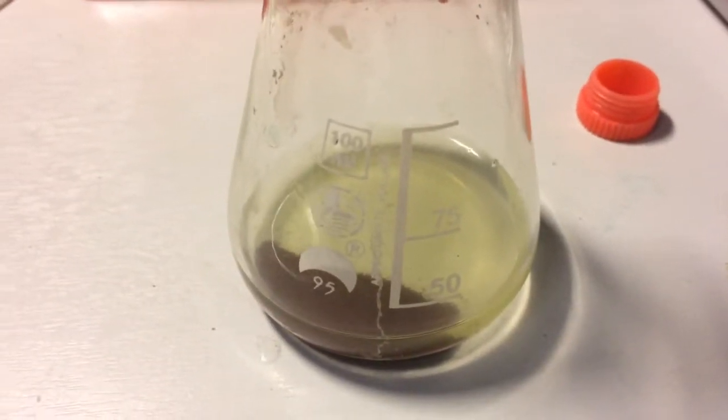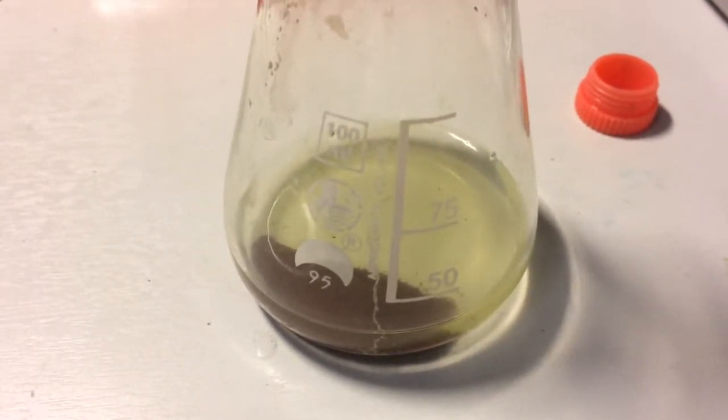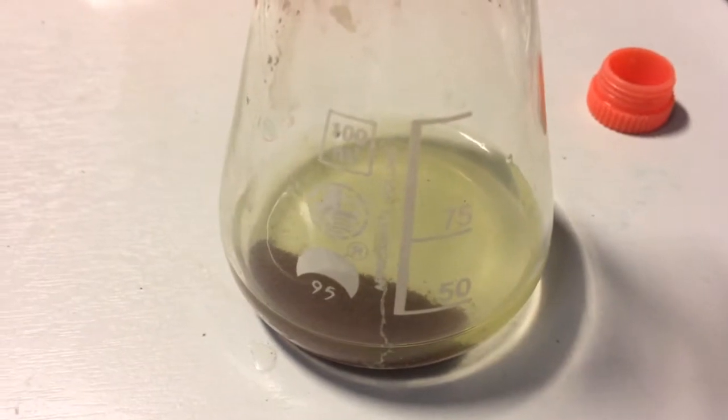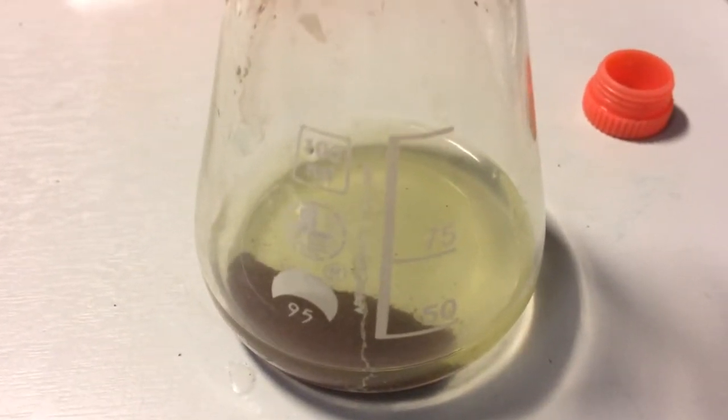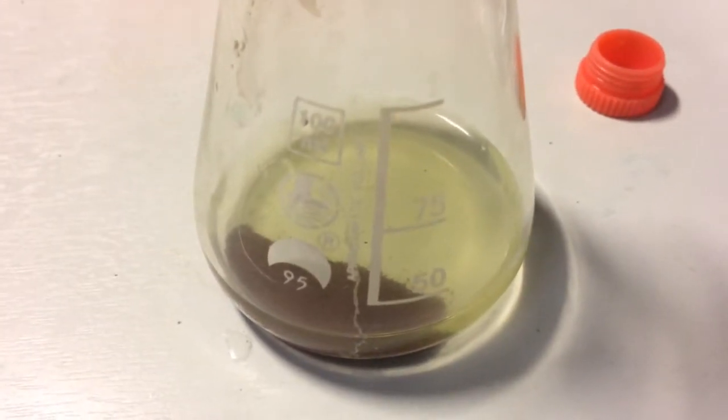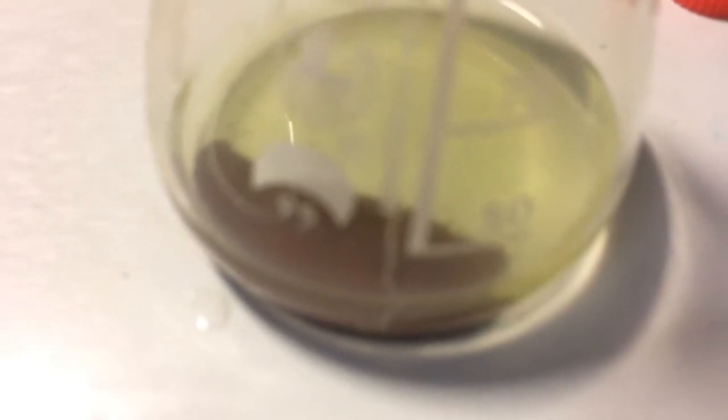After a while, the reaction is complete. You can now see that the original blue solution is now greenish yellow. This is because the solution is no longer copper sulphate. There is now a different compound, iron sulphate. The grey iron filings are now completely surrounded by copper, giving it a reddish brown appearance.